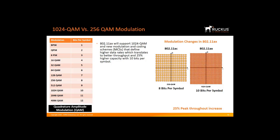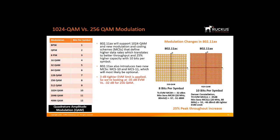Applications such as 4K video streaming are expected to drive internet traffic to 278 petabytes per month by 2021. 11AX also introduces two new modulation coding schemes, MCS-10 and MCS-11, which will most likely be optional. Due to the denser constellation, a 3dB tighter EVM limit is applied — minus 35dB EVM versus minus 32dB for 256-QAM. 1024-QAM can only be used with 242 subcarriers or tones or larger, meaning at least a full 20 MHz channel will be needed for 1024-QAM.